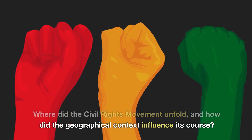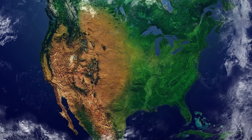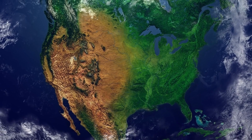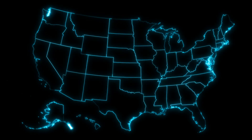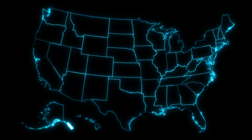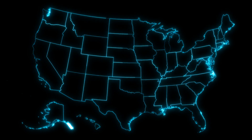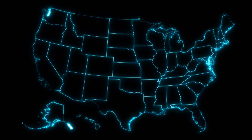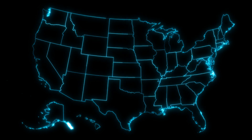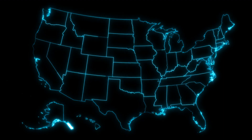Where did the civil rights movement unfold, and how did the geographical context influence its course? The civil rights movement primarily unfolded within the United States, with epicenters in the southern states where racial segregation and discrimination were most deeply ingrained. The geographical context influenced the movement's strategies and challenges, with southern states being focal points for protests and activism.